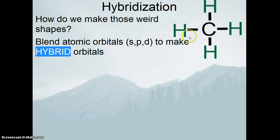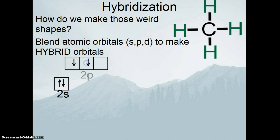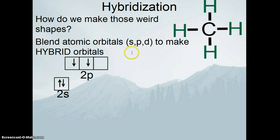Let's consider the methane molecule — carbon with four hydrogens around it. Here is the electronic configuration for neutral carbon: two electrons in the 2s orbital and two electrons in the 2p orbital. Carbon likes to have eight electrons around it, and in methane it's tetrahedral in geometry, meaning carbon is sharing four electrons, each with a hydrogen. But as we see, we don't have four orbitals each with one electron — we have one full orbital, two half-filled orbitals 90 degrees to each other, and one completely empty orbital. So we don't get a tetrahedral geometry at all.